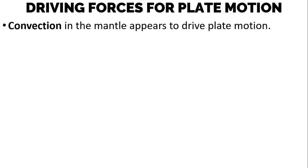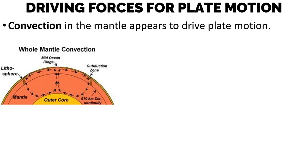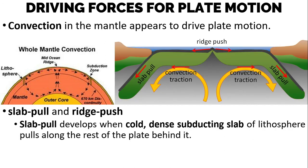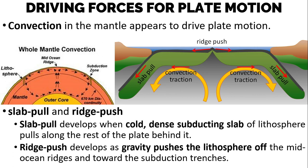What allows plates to move? The answer is convection in the mantle. There are two types of driving forces. Slab pull develops when a cold, subducting slab of lithosphere pulls along the rest of the plate behind it. Ridge push develops as gravity pushes the lithosphere off the mid-ocean ridges and toward the subduction trenches.